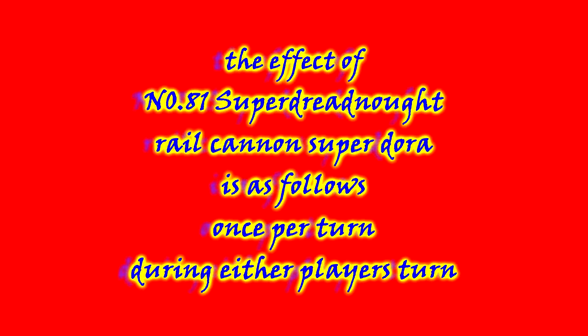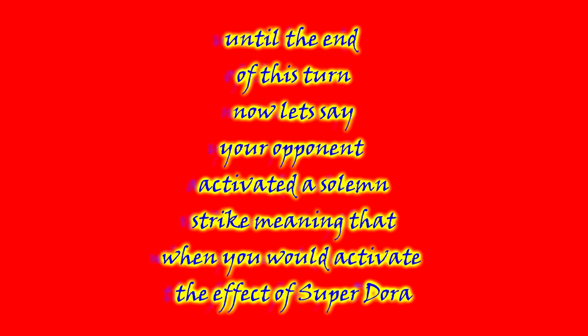The effect of Number 81: Super Dreadnought Rail Cannon Super Dora is as follows. Once per turn, during either player's turn, you can detach one XYZ material from this card and target one face-up monster on the field. The target is unaffected by card effects, except for its own effects, until the end of this turn.